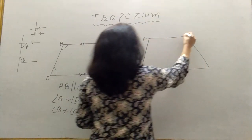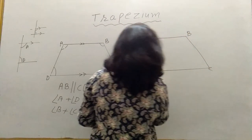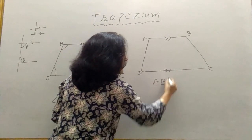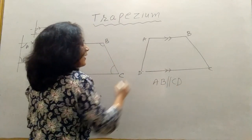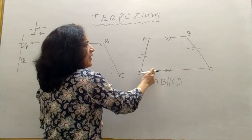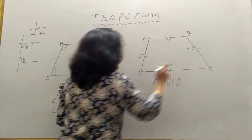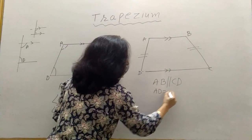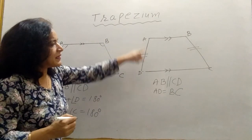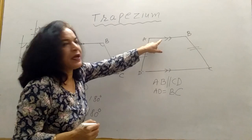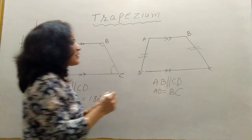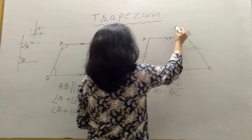But if in a trapezium ABCD, side AB is parallel to CD and AD is equal to BC — meaning one pair is parallel and another pair is equal — then that trapezium is called an isosceles trapezium.